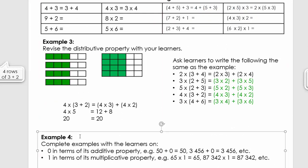Let's go to example four. If I add zero to any number, that number will remain the same. So 50 plus zero equals 50, and 3,456 plus zero equals 3,456. If I multiply a number by one, it will still stay that number. So 65 times 1 equals 65, and 87,340 times 1 equals 87,340. I want you to pause the video and give me two examples where you add with zero and two examples where you multiply with one.